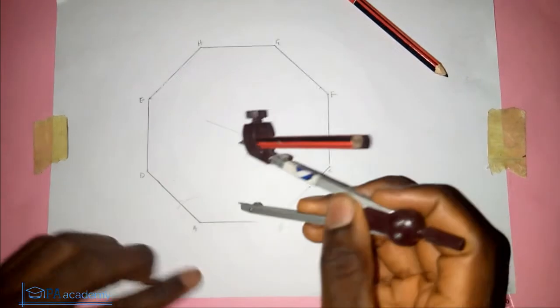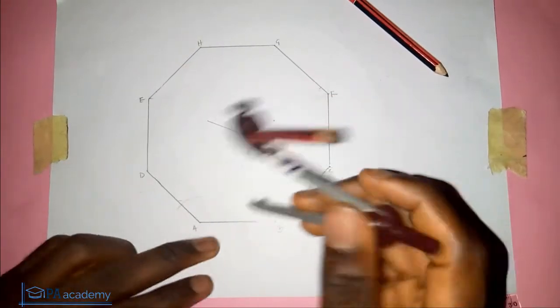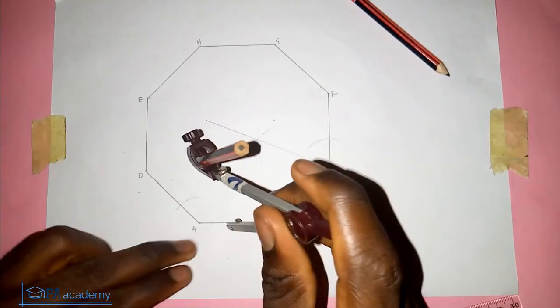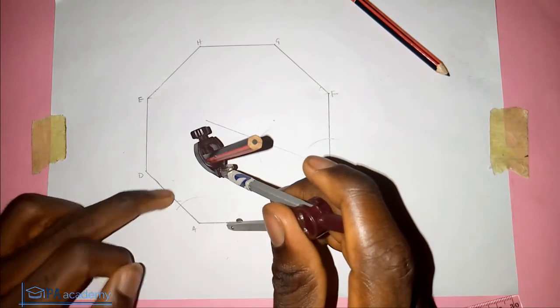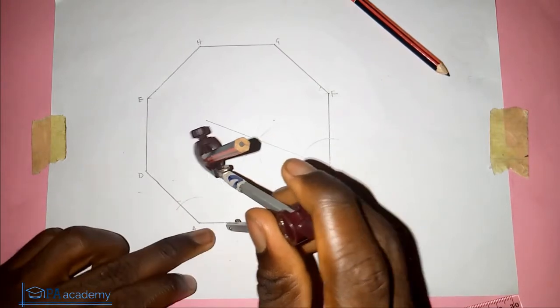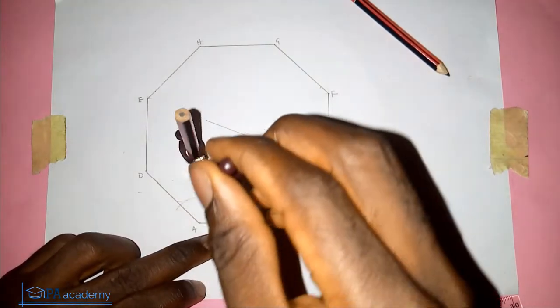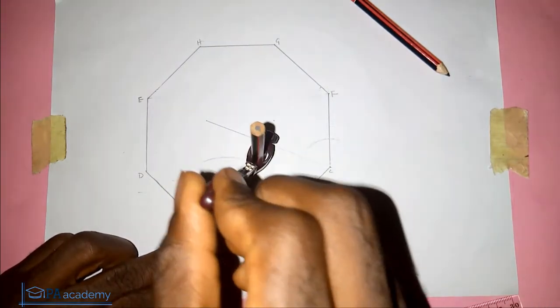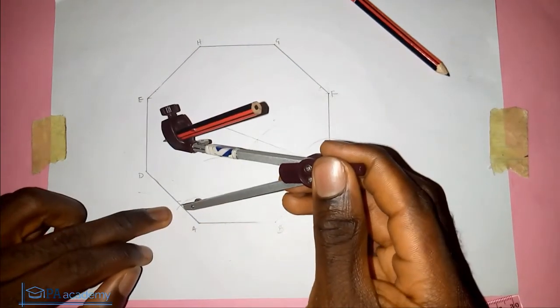Using the same process, I'll pick a small length on my compass. I can increase the length a bit, just use something convenient for you. From where this arc is cutting line AB, we draw an arc. With the same length, come to this second point and draw another arc.